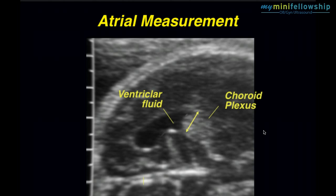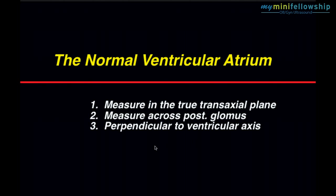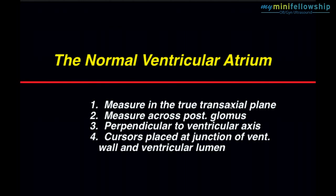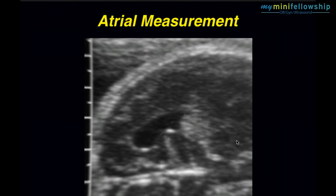We want to measure across the distal glomus. We want to measure perpendicular to the ventricular axis. That means we must determine the ventricular axis and measure perpendicular to it. We do not want to measure perpendicular to the midline, as is the case with certain other ventricular measures. Finally, we want to place the cursors at the junction of the ventricular wall and the ventricular lumen. To put this simply, we want to measure the shortest distance across the ventricular lumen at the ventricular atrium.